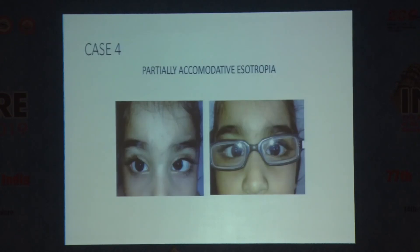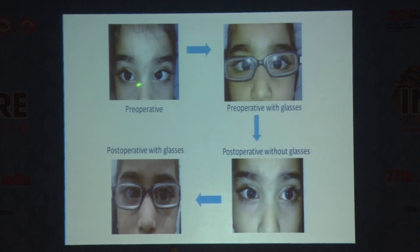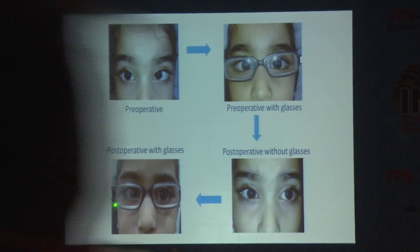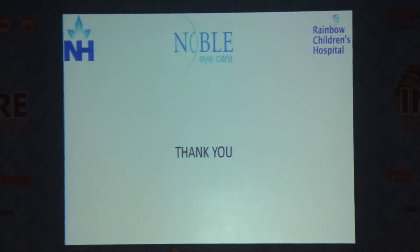The last case is also partially accommodative — a girl with esotropia, given glasses, still persisting. This is an indication for surgery for the amount of esotropia remaining after giving full cycloplegic correction. Even after surgery, without the glasses the esotropia is still there — it's only with glasses and surgery together that full correction is achieved. So these are roughly four common cases you'd come across in children. The others will be discussed in other courses. Thank you.